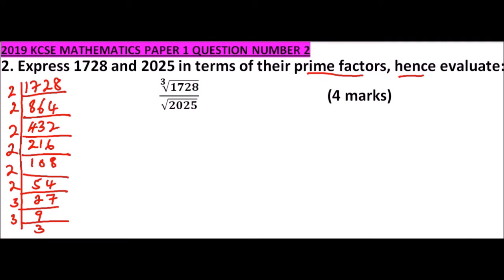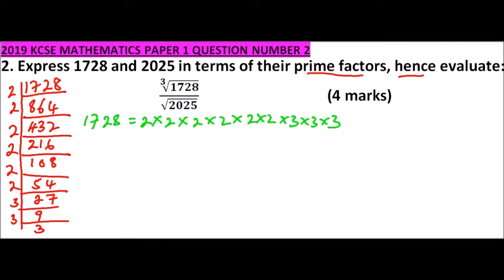This means the prime factors of 1728 are: 2 × 2 × 2 × 2 × 2 × 2 × 3 × 3 × 3, which is 2 to the power of 6 multiplied by 3 to the power of 3.